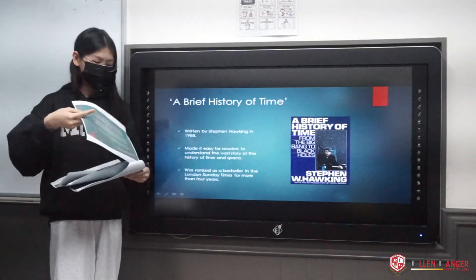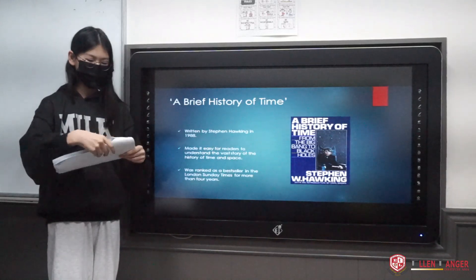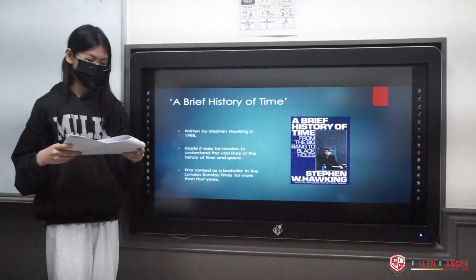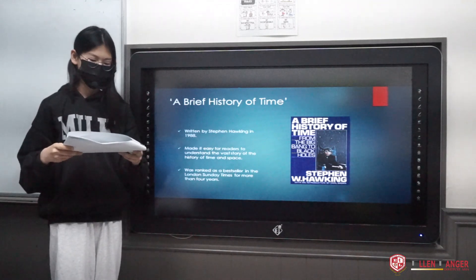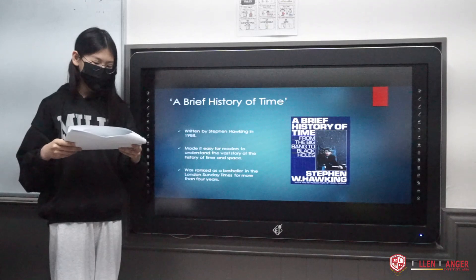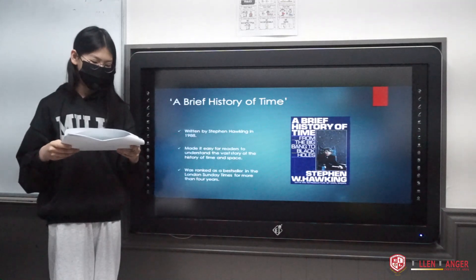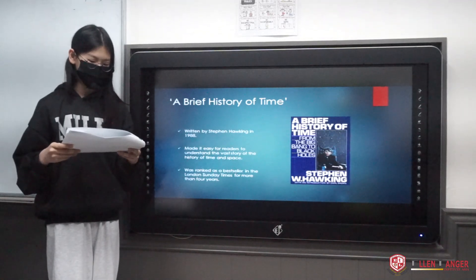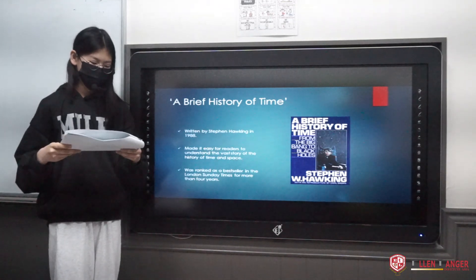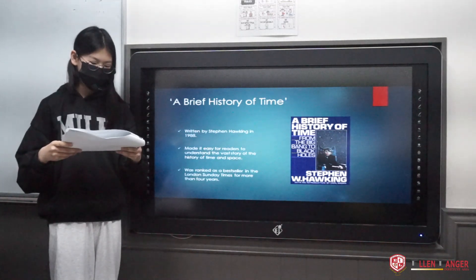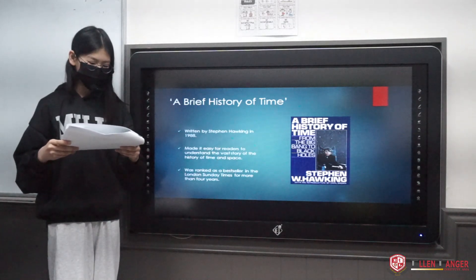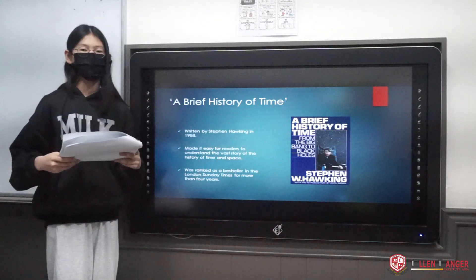A Brief History of Time. A Brief History of Time was written by Stephen Hawking in 1988. Stephen Hawking made it easy for readers to understand the history of time and space. It was ranked as a bestseller in the London Sunday Times for more than four years.